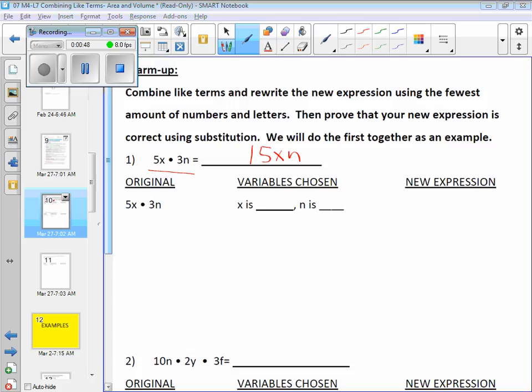Now, what we can do to prove that the original expression, 5x times 3n, is equivalent to 15xn, we can use substitution and sub in the variables for x and n and see if it works for both expressions. The variables that you choose should be small, but my suggestion is don't use 1, because sometimes 1 can give you a false reading. You can substitute a 1 in and it looks like it's the same, but in fact it's not the same expression.